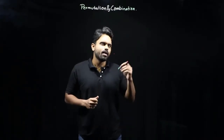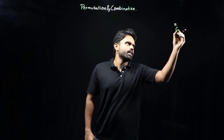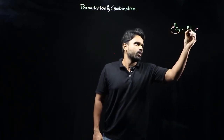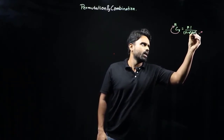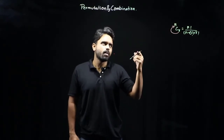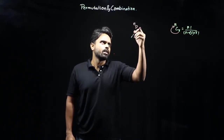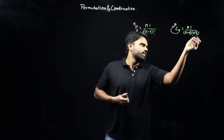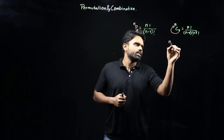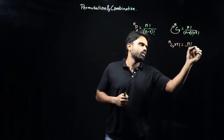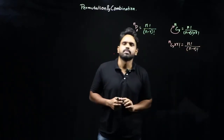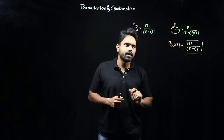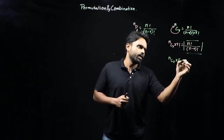The formula for NCR — selecting R people out of N — is N! divided by (N−R)! × R!, which represents combination. The formula for NPR is N! divided by (N−R)!. If I bring R! to the left-hand side, I get: NCR × R! = N! / (N−R)!, which is nothing but NPR. So NCR × R! = NPR.